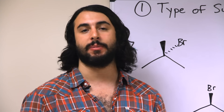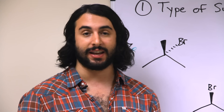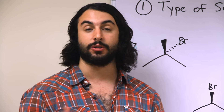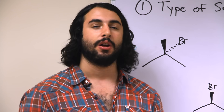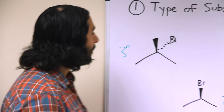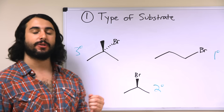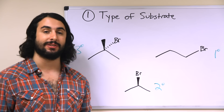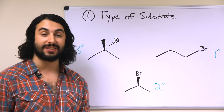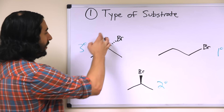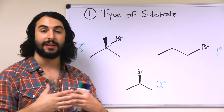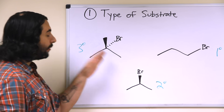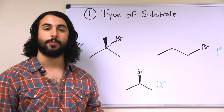So when we're learning these first few mechanisms, a very common substrate is a simple haloalkane. We want to understand that the differing substitutions, or degrees of substitution of each haloalkane, are going to tell us which mechanisms can or cannot happen. For example, if we look at a tertiary haloalkane, we have to understand that SN2 is not going to be possible, because there's simply too much steric hindrance for a nucleophile to approach that tertiary center.